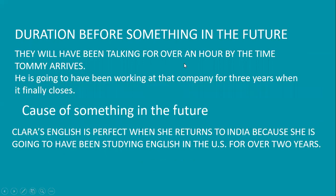Future perfect continuous can also express cause of something in the future: 'Clara's English is perfect when she returns to India, because she is going to have been studying English in the US for over two years.' We use the future perfect continuous before another action in the future as a good way to show cause and effect.